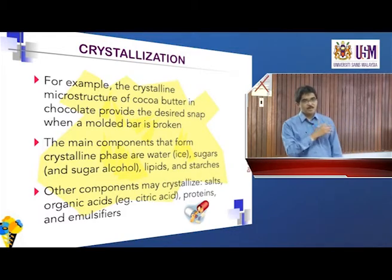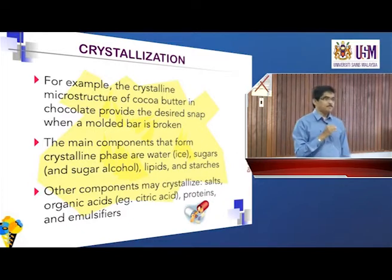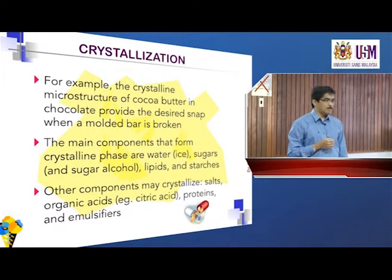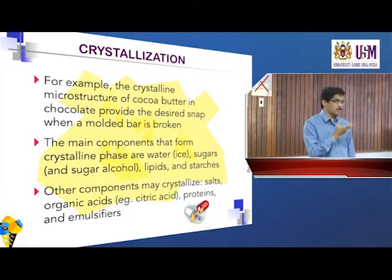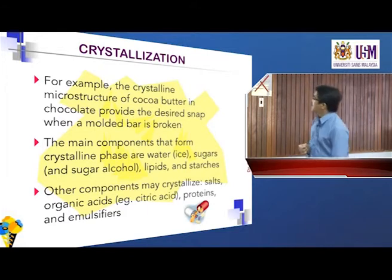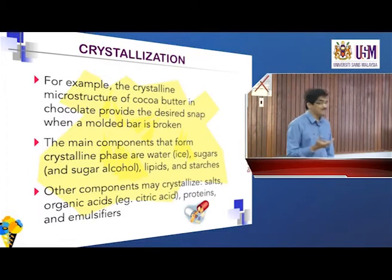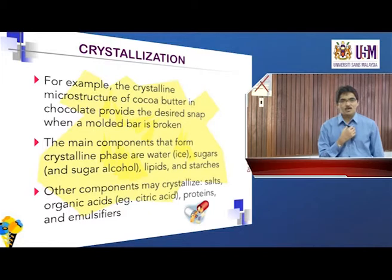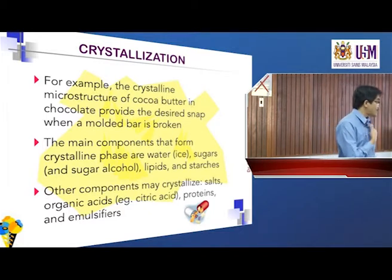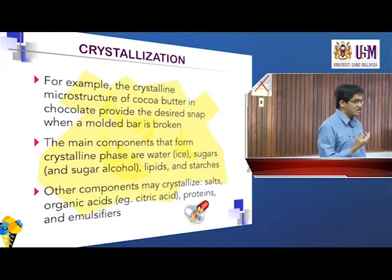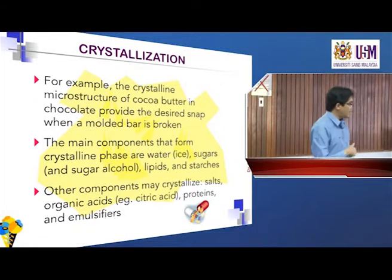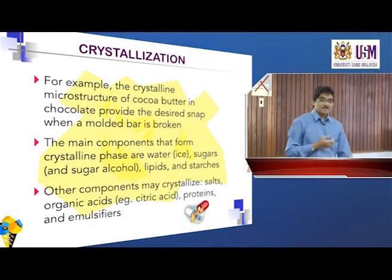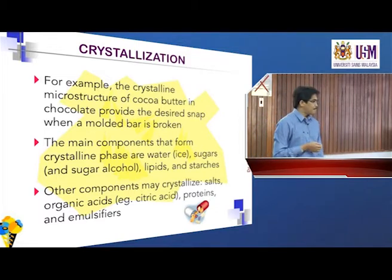Other components that may crystallize include sugar alcohols such as sorbitol, maltitol, mannitol, and xylitol. Salt can also crystallize — the most familiar is table salt, sodium chloride. Nowadays in supermarkets you can find several types of salt, including iodized salt and potassium chloride. In fact, more and more industries in developed countries are starting to replace sodium chloride with potassium chloride, because sodium is associated with hypertension. However, too much potassium chloride gives a bitter taste, which is a problem.